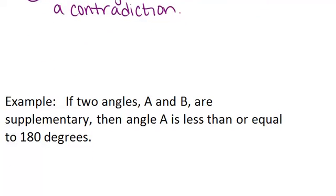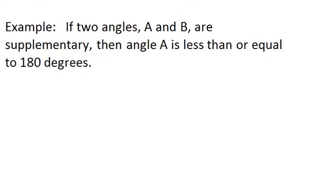For this example we're going to say if two angles A and B are supplementary then angle A is less than or equal to 180 degrees. So with an indirect proof we start by assuming the opposite.